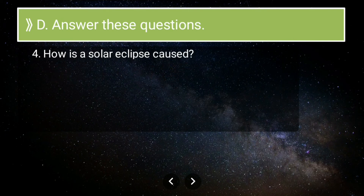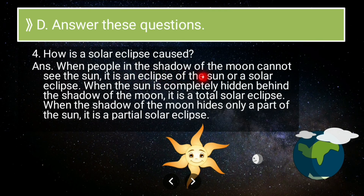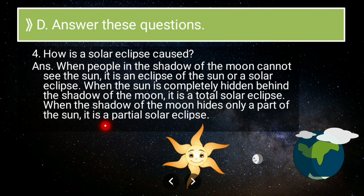Fourth long answer: how is a solar eclipse caused? When people are in the shadow of the Moon and cannot see the Sun, it is an eclipse of the Sun, or solar eclipse. When the Sun is completely hidden behind the shadow of the Moon, it is a total solar eclipse. When the shadow of the Moon hides only a part of the Sun, it is a partial solar eclipse — people in those positions see only part of the Sun.